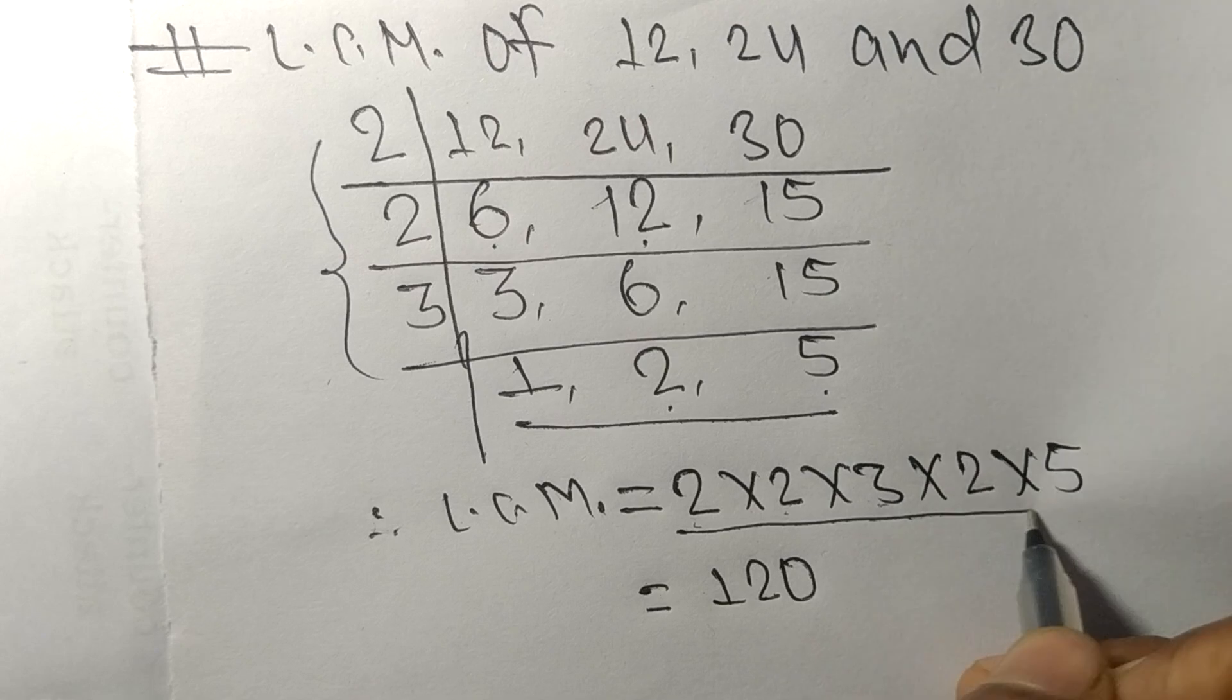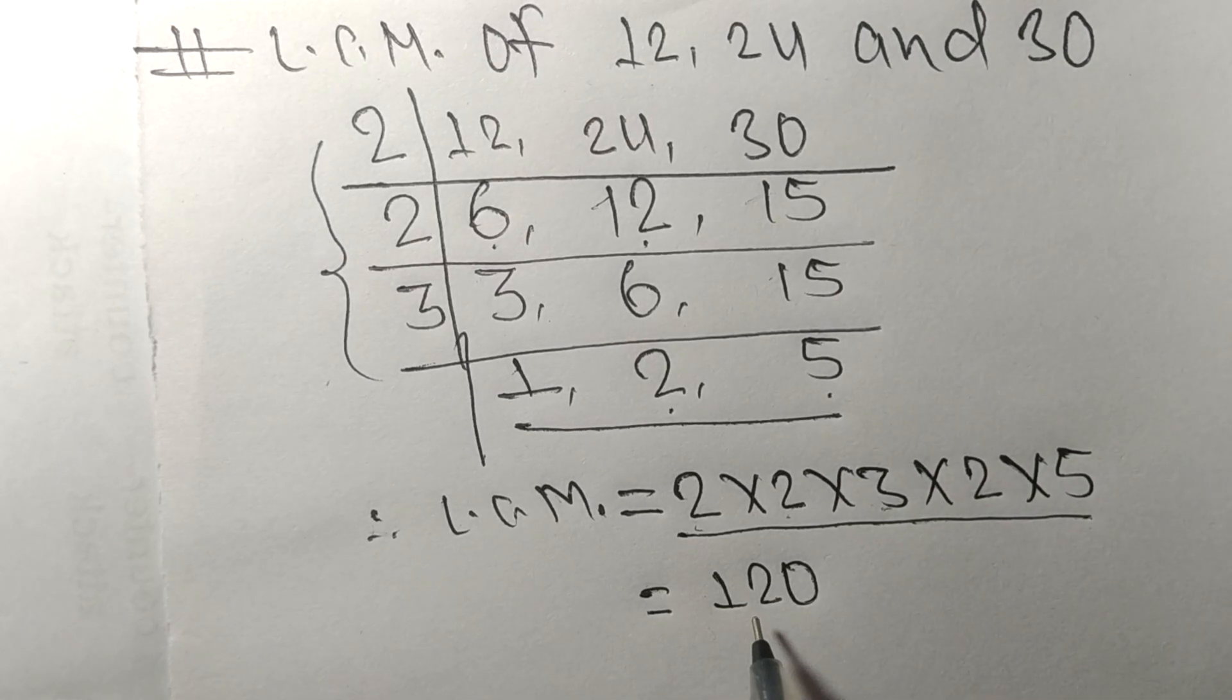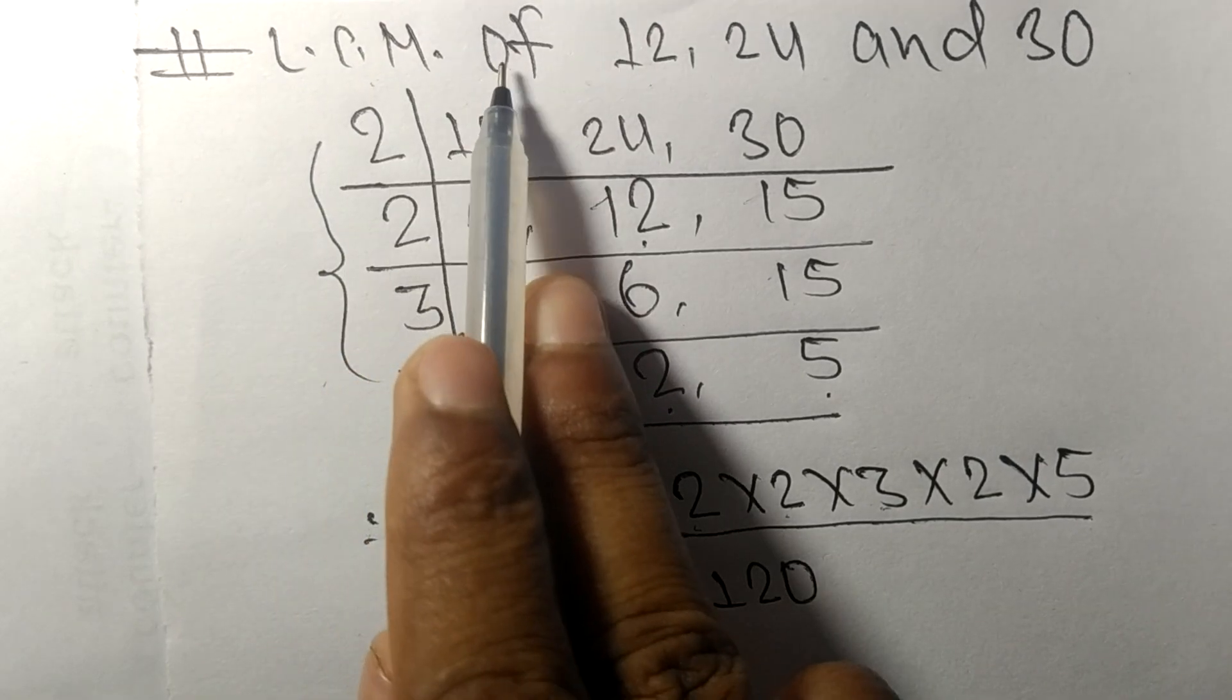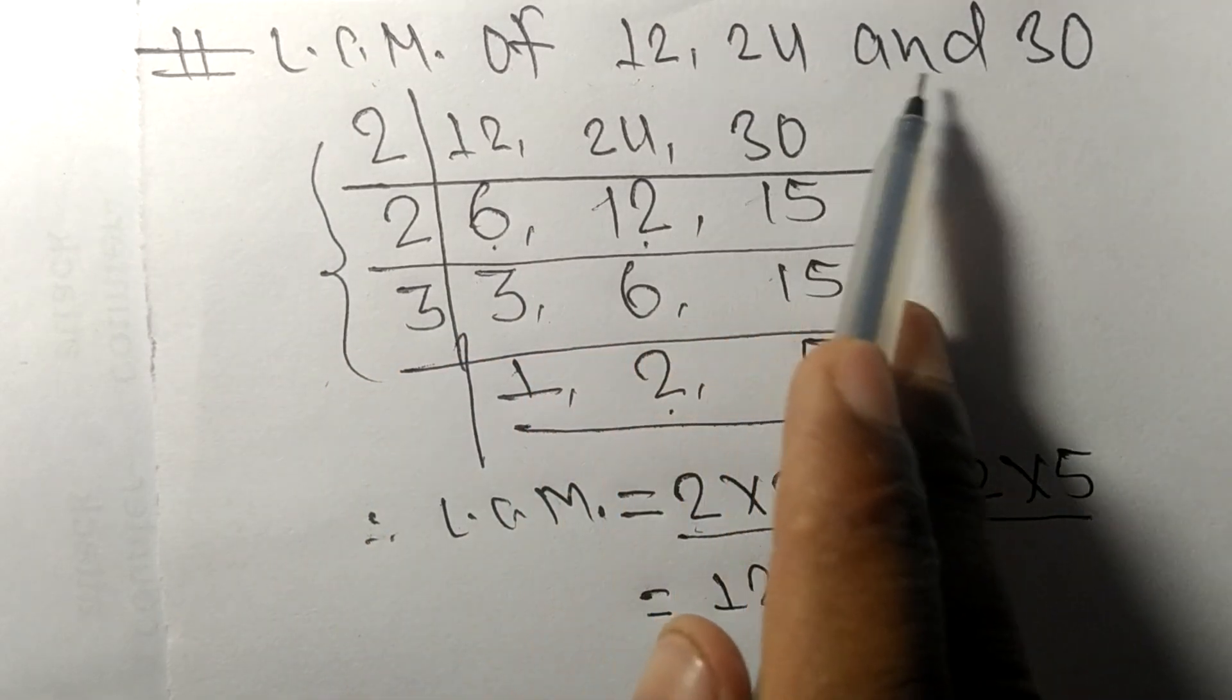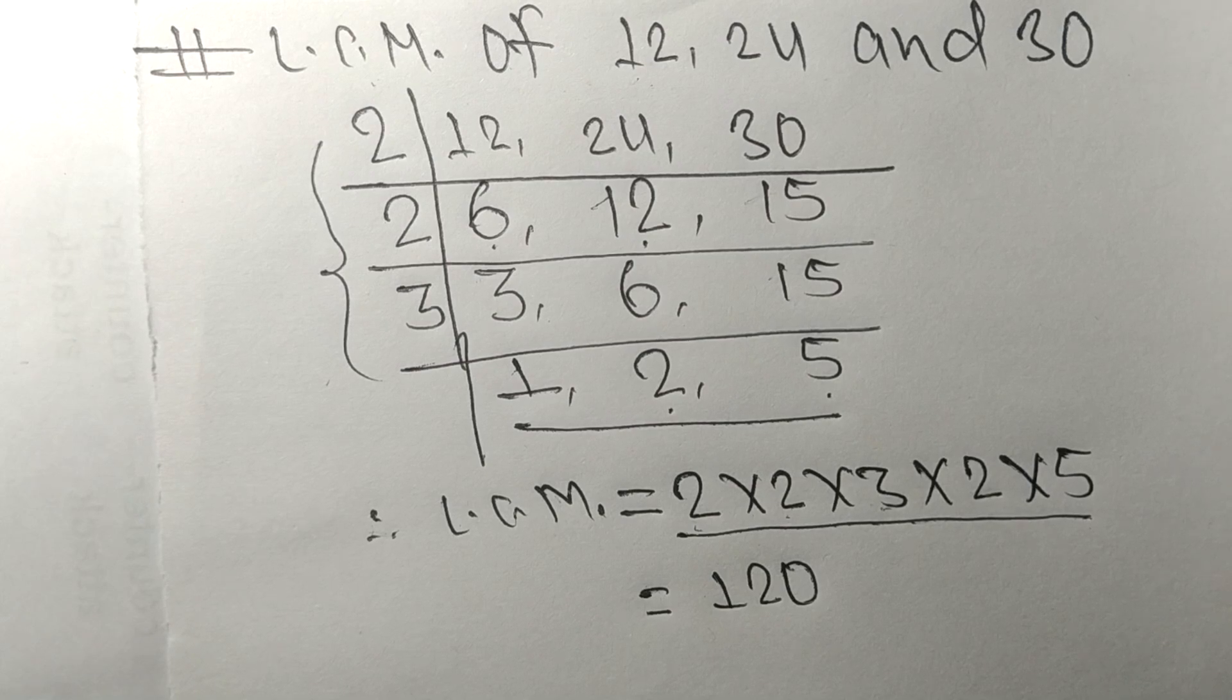So by multiplying all these numbers, we got 120. So 120 is the LCM of 12, 24 and 30. So this much for today and thanks for watching.